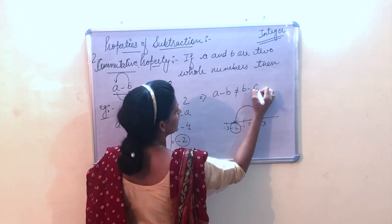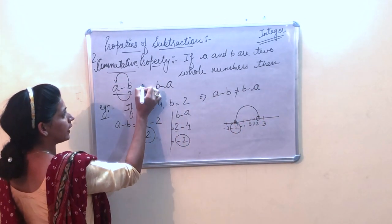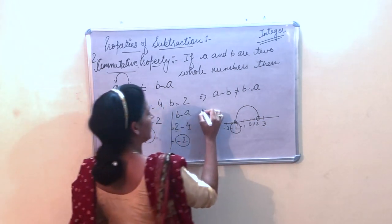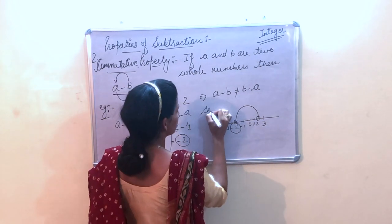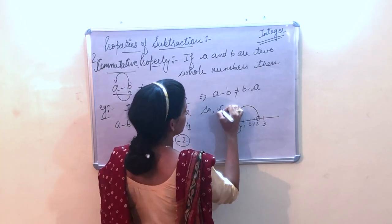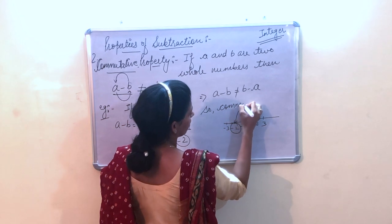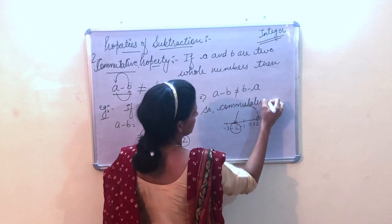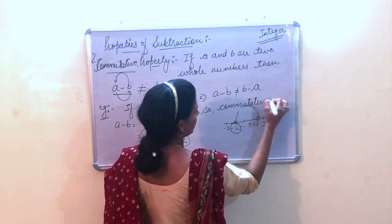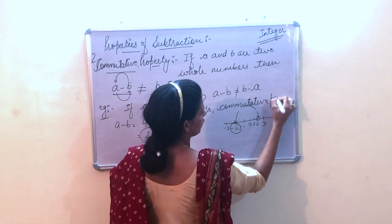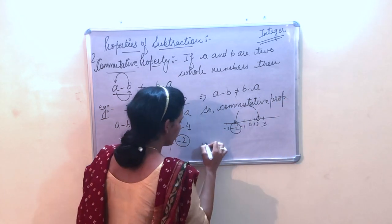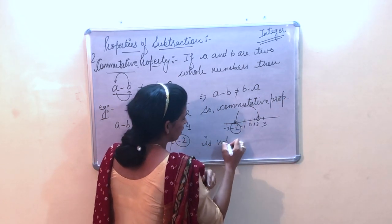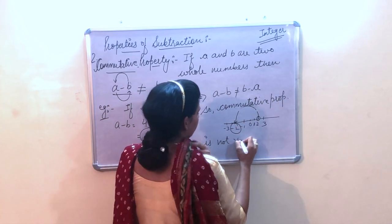Here, a minus b gives positive 2, which is a whole number, but b minus a gives minus 2. Both are not equal, so a minus b is not equal to b minus a. Therefore, the commutative property is not verified for subtraction.